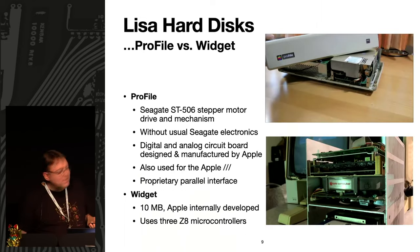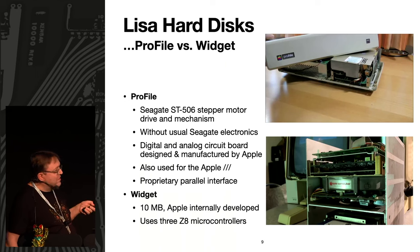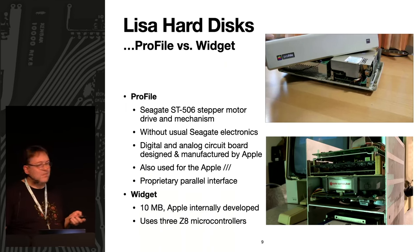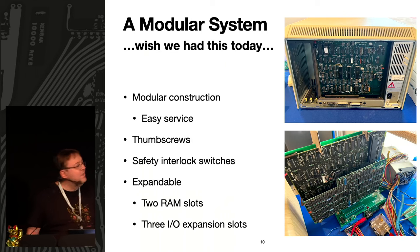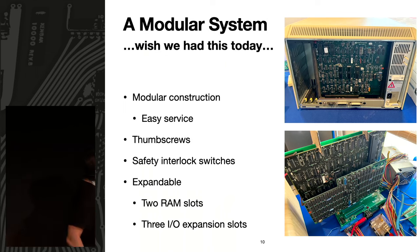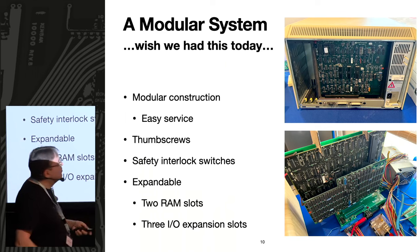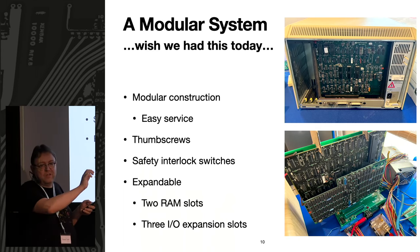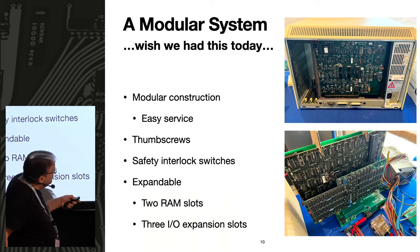The Profile hard disk used the Seagate mechanism with Apple-built electronics, and also worked on the Apple III. This proprietary parallel interface was simple, whereas the Widget interface was a mess due to Apple-built mechanics. But the nice thing about this Apple system is that it's actually easy to maintain and repair, based on modular construction. Here's the back side of a Lisa with the back panel removed: on the right is an encapsulated power supply you can pull out — no screwdriver needed, just plugged in on the back.